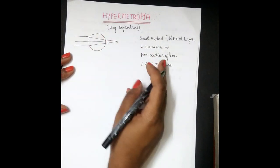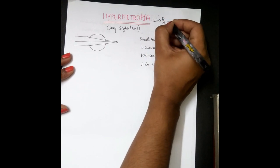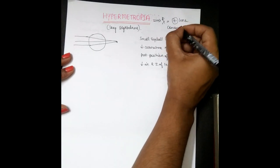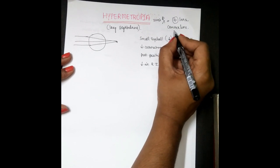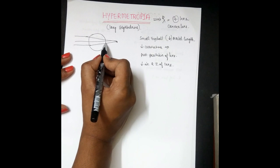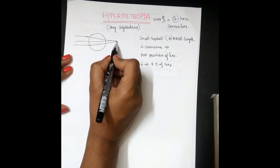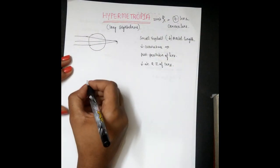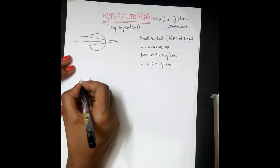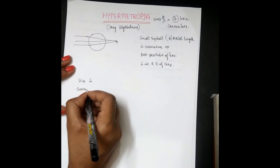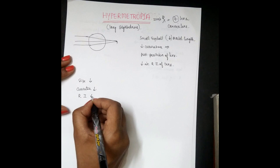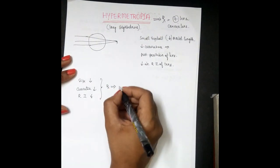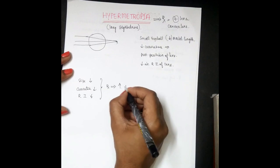To correct hypermetrophia, we should always give plus lenses — that is convex lenses. Convex lenses help to converge more; since the rays are converging beyond the retina, we use plus lenses to make them converge on the retina. In hypermetrophia, eyeball size decreases, curvature decreases, and refractive index decreases — all resulting in hypermetrophia. The treatment is by giving plus lenses to increase the converging power.